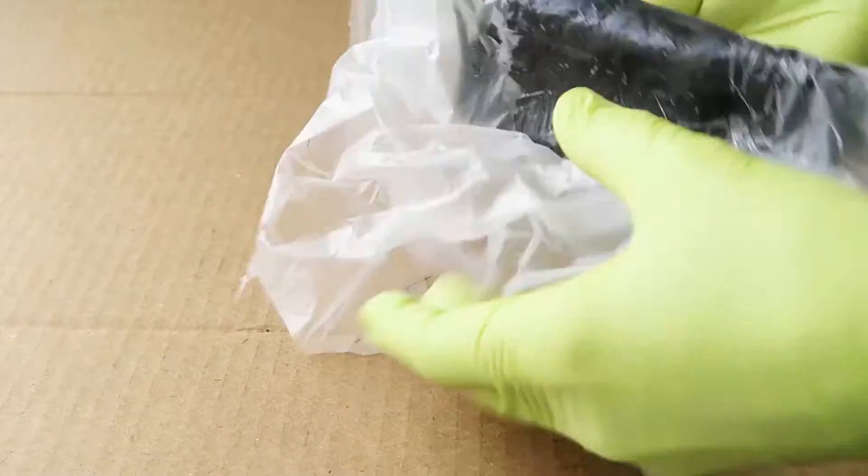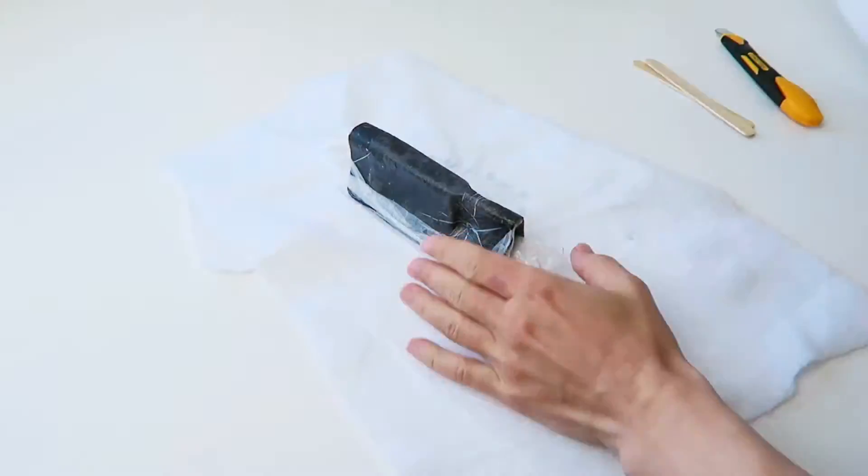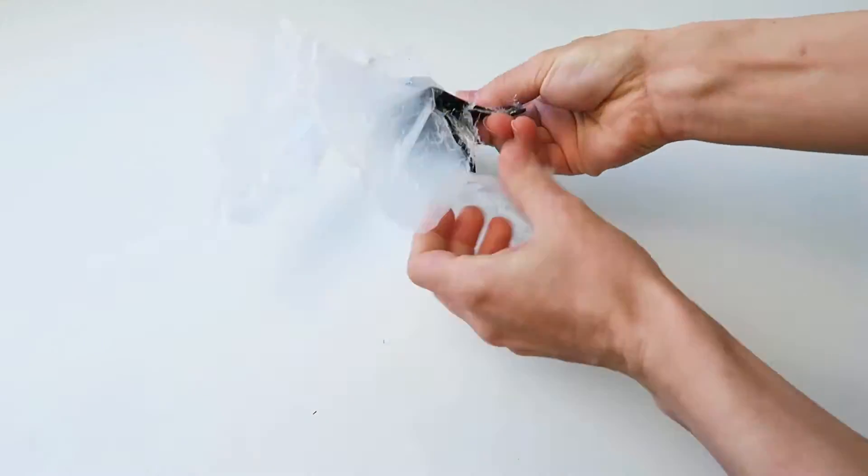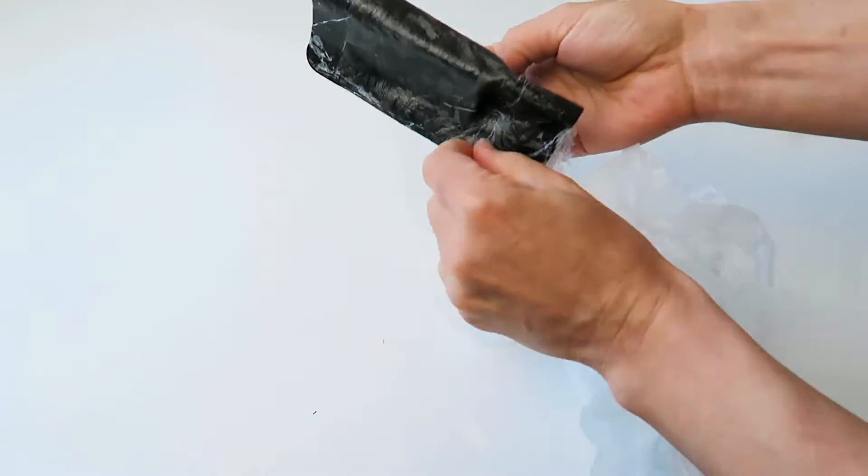However, it's important to leave a wide border of extra plastic around the part so that you have a sturdy edge to pull from after the resin cures, otherwise it's going to be impossible to peel off the delicate plastic in one piece.